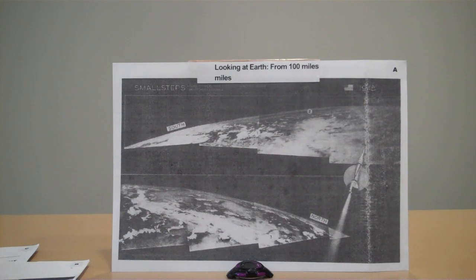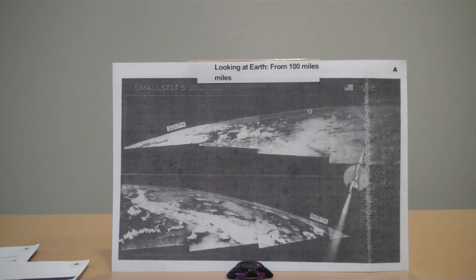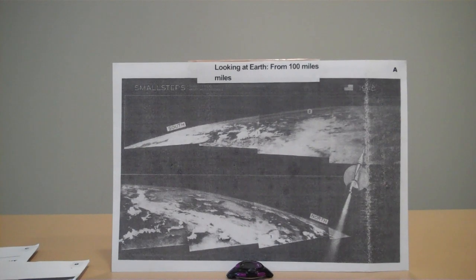If Earth is curved, it cannot be seen from a side view like this. It cannot be seen from a side view such as this. A geometric impossibility. Once again, it is geometrically impossible for a picture like this to be taken showing a side view curve like this.